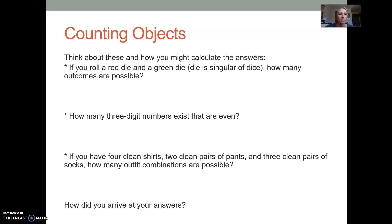Okay, hopefully you've had some time to think about these. So the first one, if you roll a red die and then a green die, how many outcomes are possible? So if we think about this, the red die, there's six possibilities, right? You can roll a one, you can roll a two, three, four, five, or six.